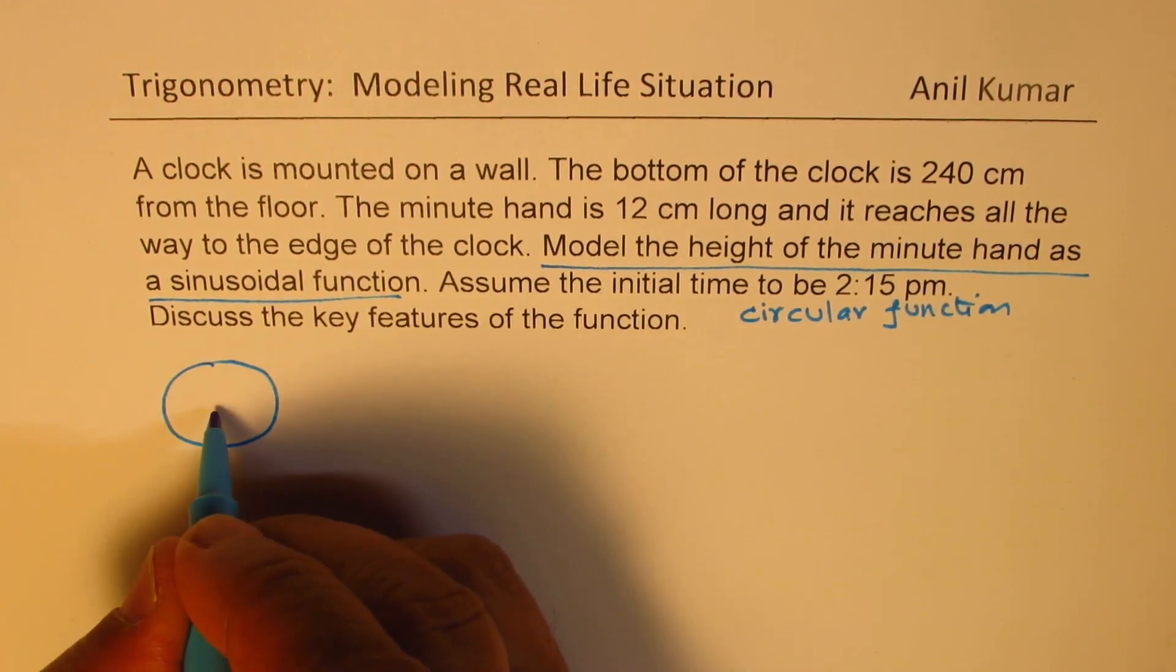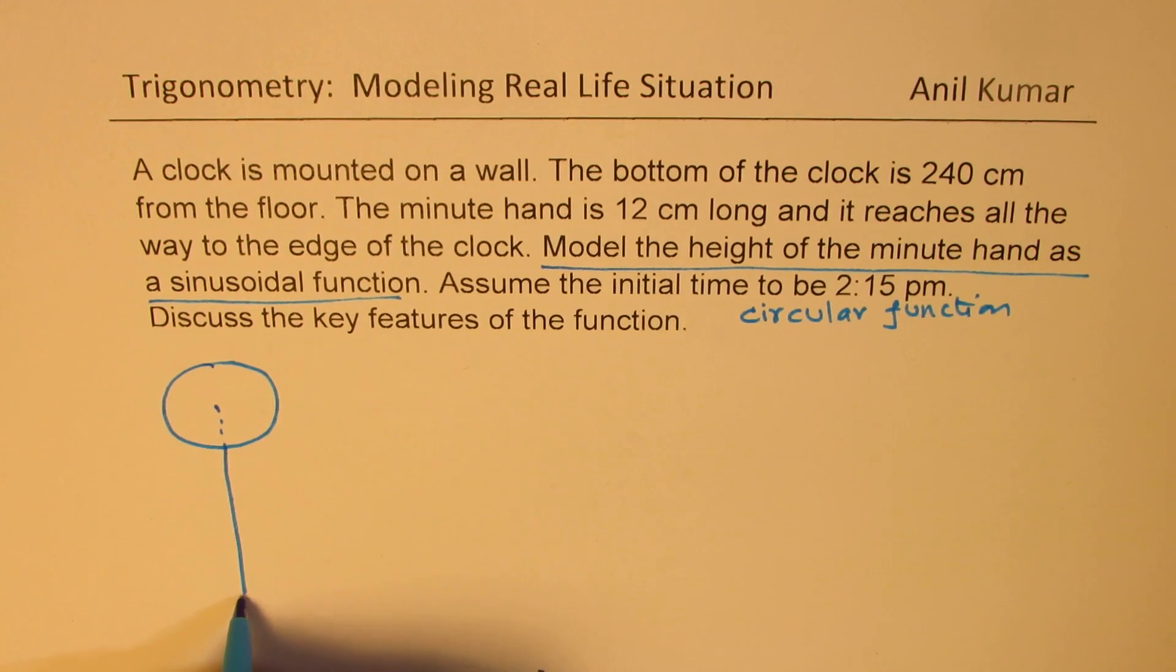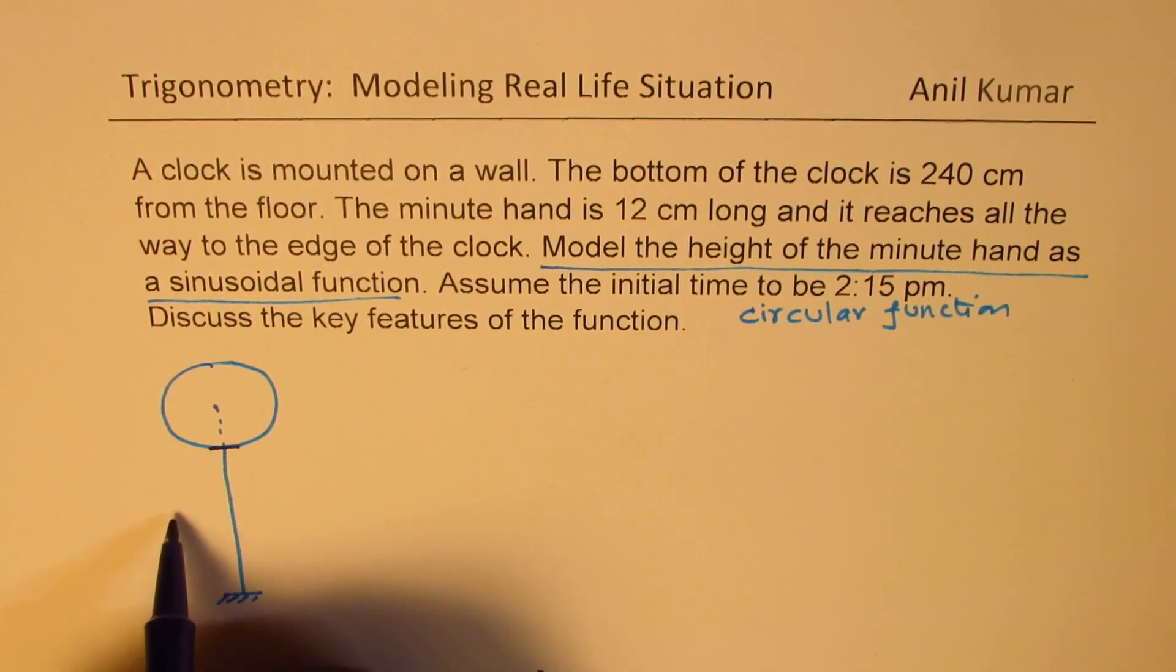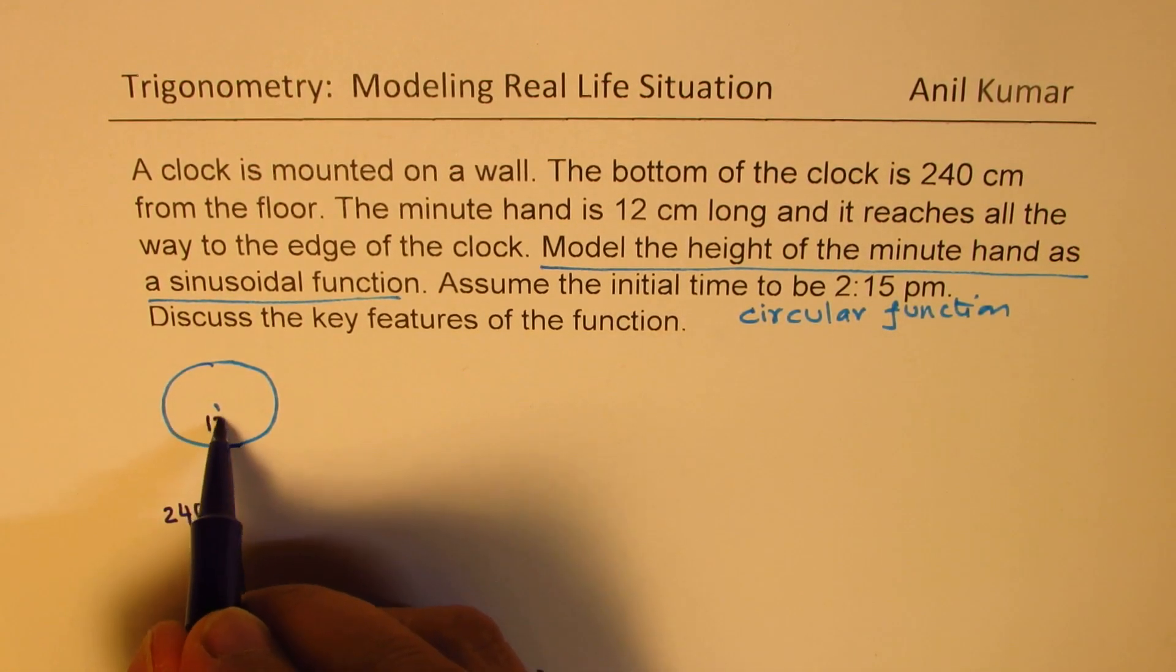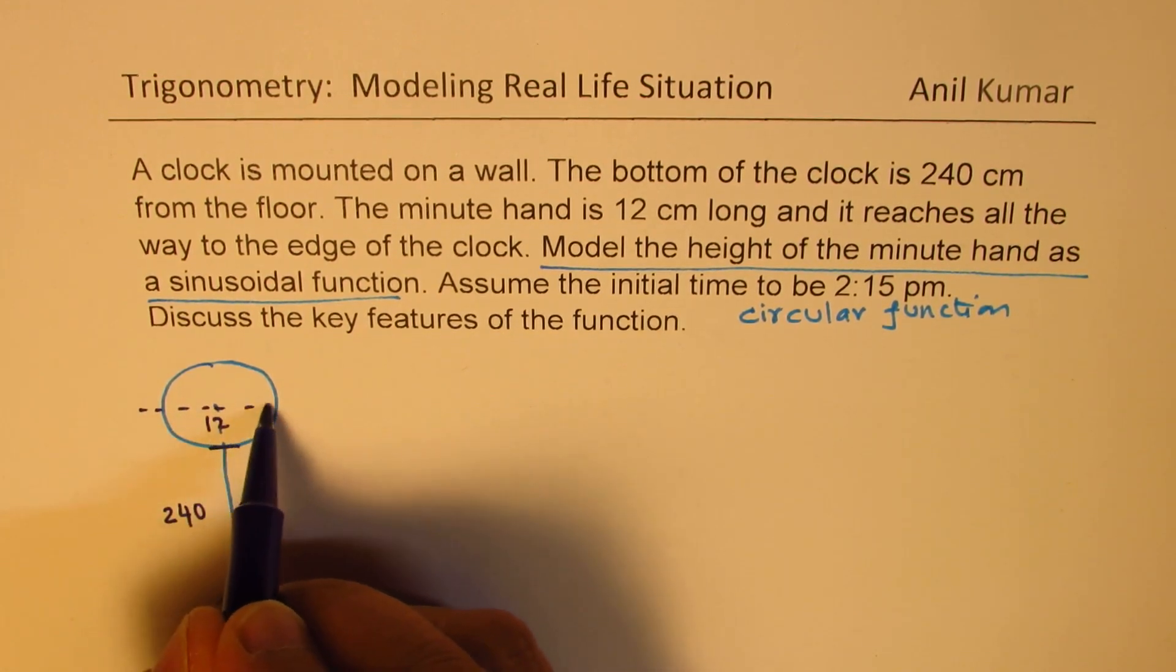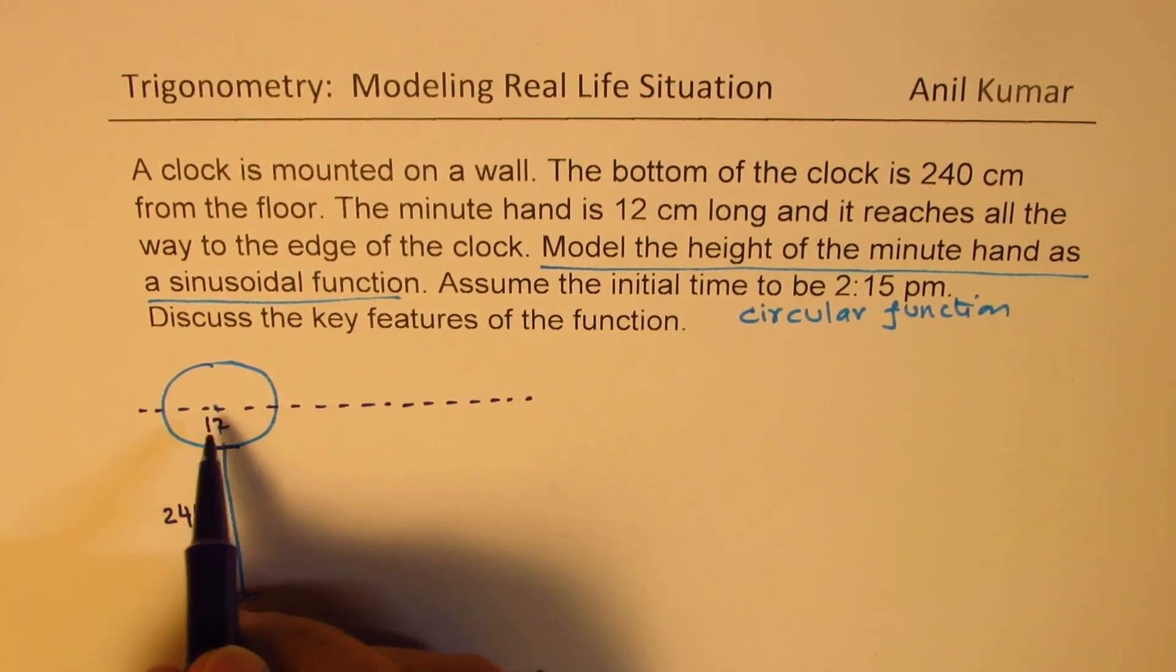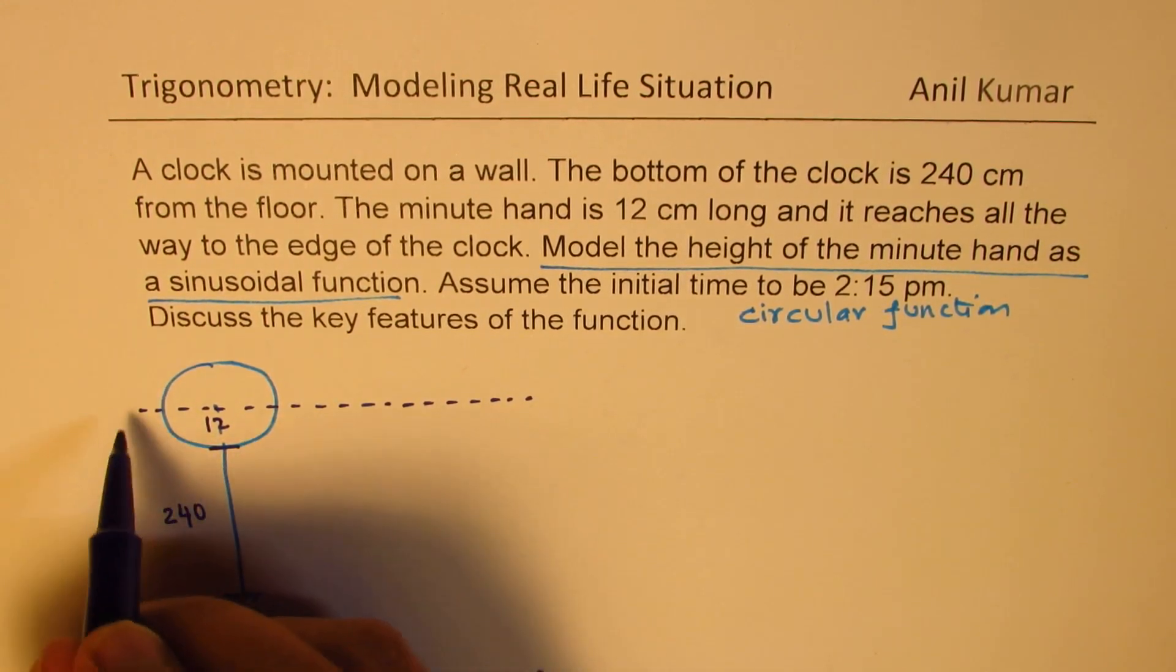Let's say that is the clock, which is mounted on a wall, and this distance from the floor is 240. The needle itself is 12, so basically from the center, the center is at 240 plus 12, which is 252. So this is at 252.